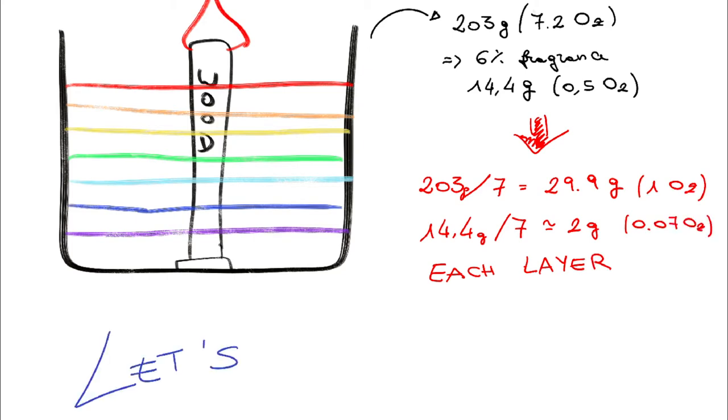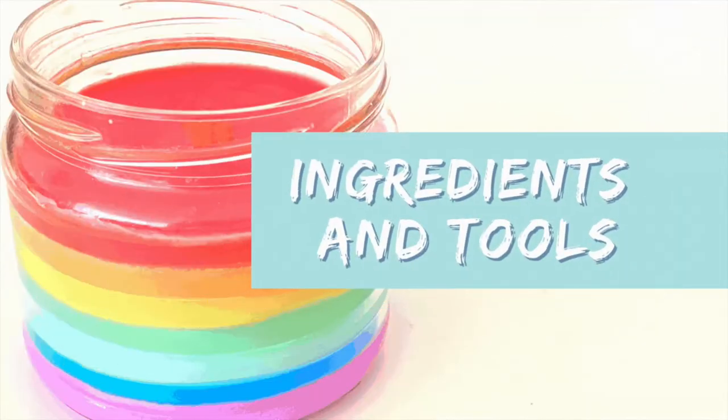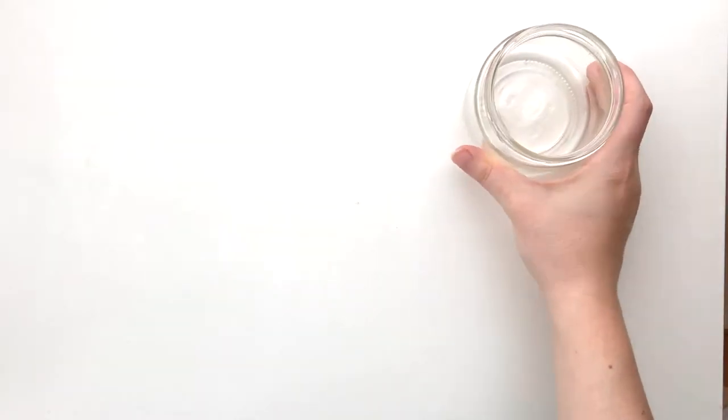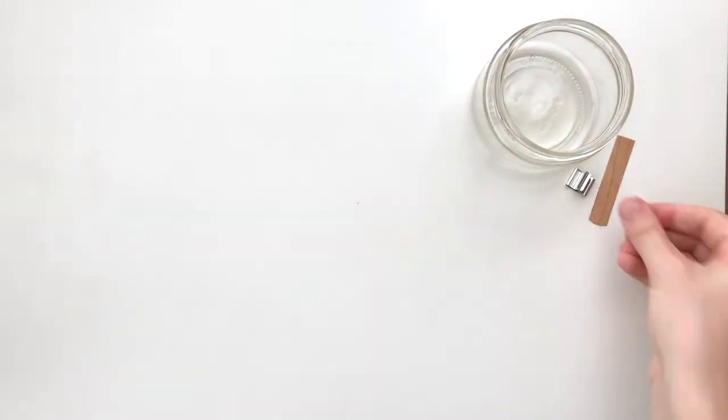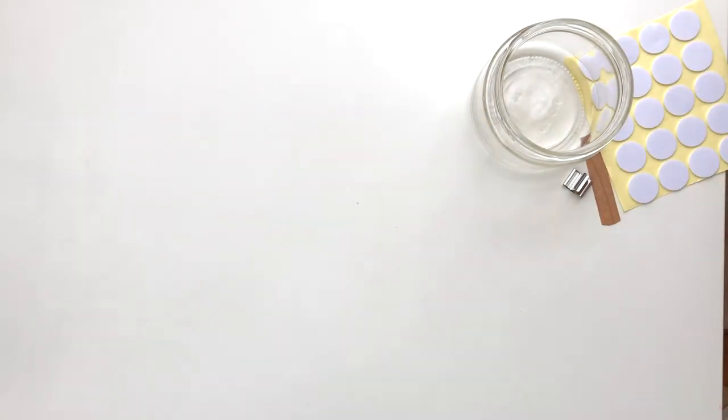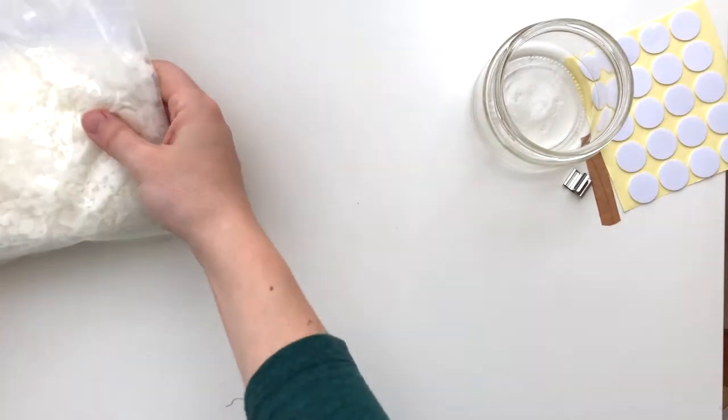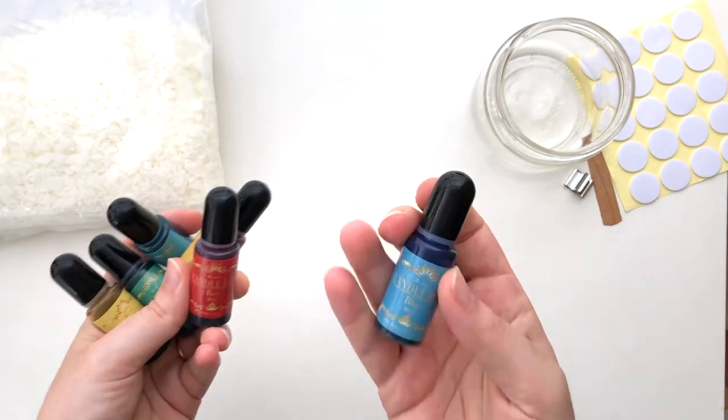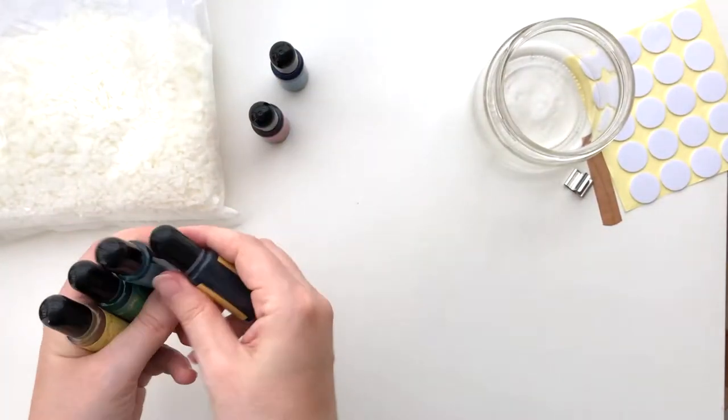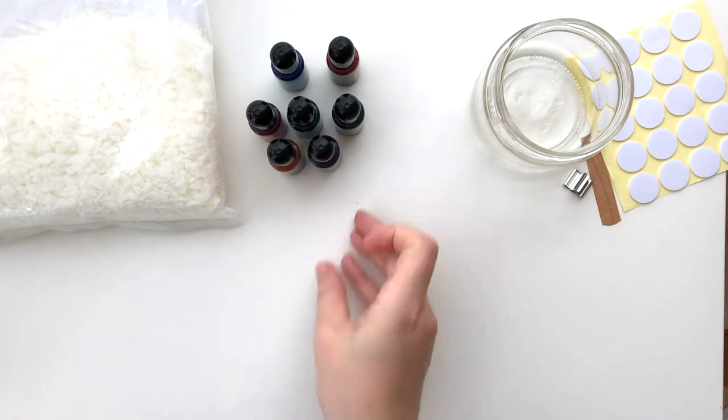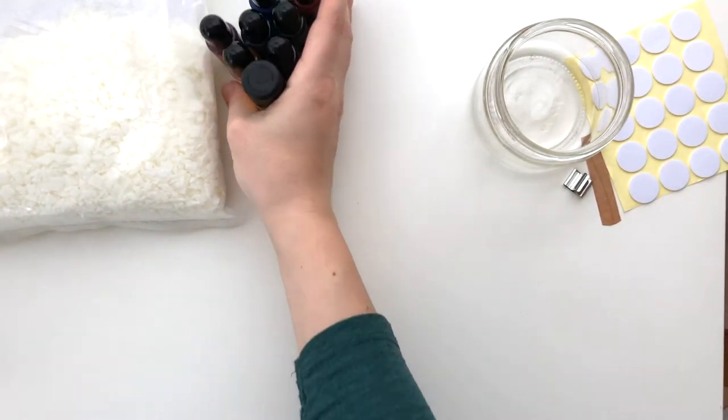Let's start by setting up the work table. We will need a glass container, a wooden wick, stickers to attach it to the container, soy wax, candle dyes and candle specific fragrances.